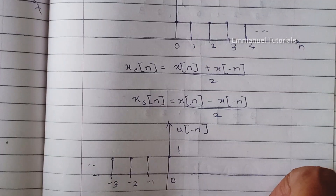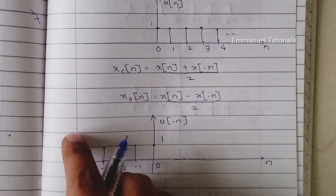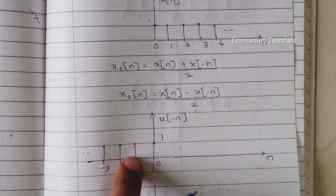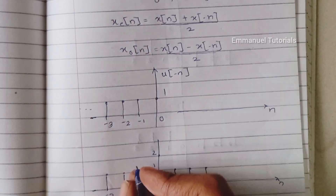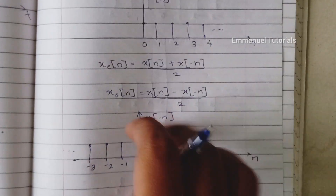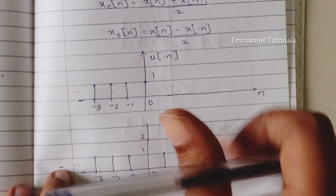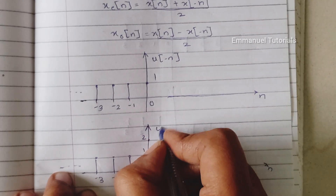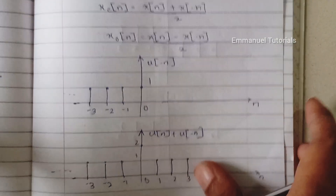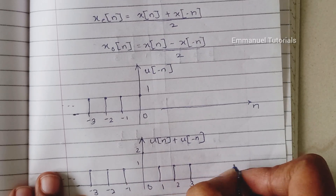Now to get the even part, we add both signals. From minus infinity to minus 1, the first signal's amplitude is 0 and the second signal's amplitude is 1, so we draw the second signal's amplitude as it is — amplitude 1 from minus infinity to minus 1. At n equal to 0, both signals have amplitude 1, so adding gives amplitude 2. From n equal to 1 to infinity, the first signal's amplitude is 1 and the second signal's amplitude is 0, so the amplitude is 1 from 1 to infinity.